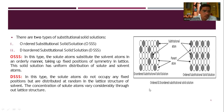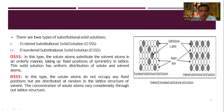In a disordered substitutional solid solution, the solute atoms do not occupy any fixed position but are distributed at random in the lattice structure of the solvent. The concentration of solute atoms varies considerably throughout the lattice structure. In the diagram, the substitutional atoms are situated randomly at any position relative to the parent atoms. Such a solid solution is called a disordered substitutional solid solution.